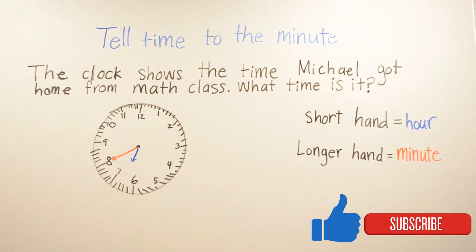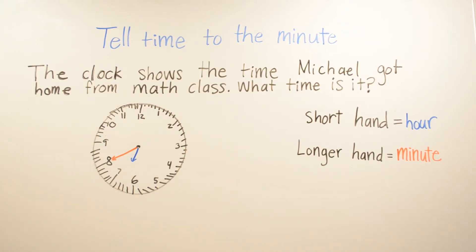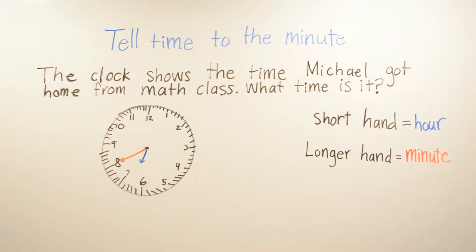In today's video, we are going to talk about telling time to the minute. First, I'm going to start out by telling you what a digital clock is and what an analog clock is. A digital clock is a clock that shows the time in numbers, and an analog clock has an hour hand and a minute hand. For this problem, we are going to use an analog clock.